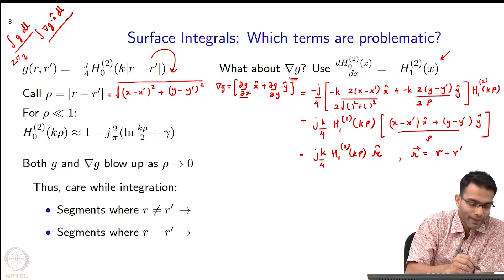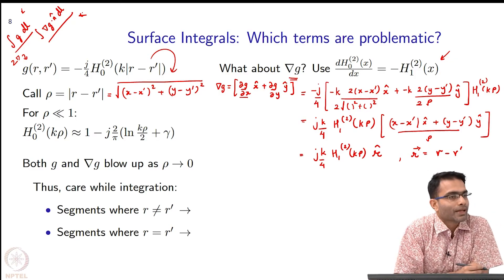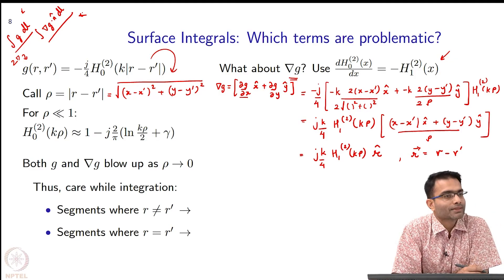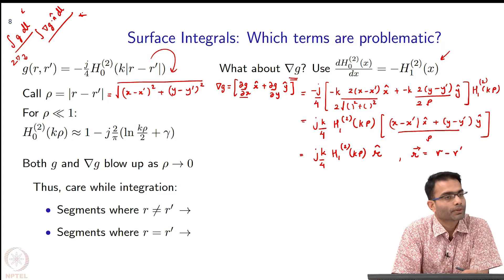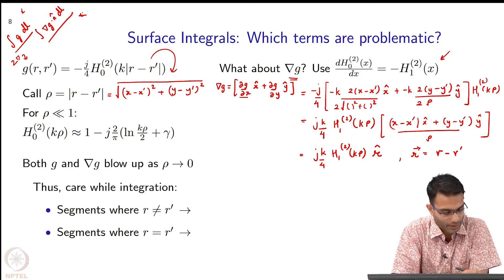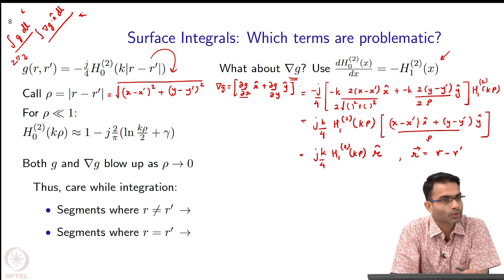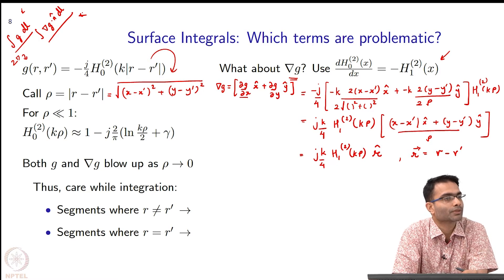Now, when we are evaluating these two integrals over here, as long as G and grad G dot n hat, as long as these terms are finite, there is no problem. I can use Gauss quadrature rule, numerical integration. The trouble will happen when these quantities begin to - we know that Green's functions have a singularity at the origin.